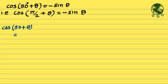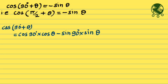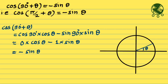Cos of 90 plus theta by the compound angle formula is cos 90 times cos theta minus sine 90 times sine theta. Cos 90 is 0 and sine 90 is 1, and that's why cos of 90 plus theta equals minus sine theta. It was very easy. This is one way to derive that formula.